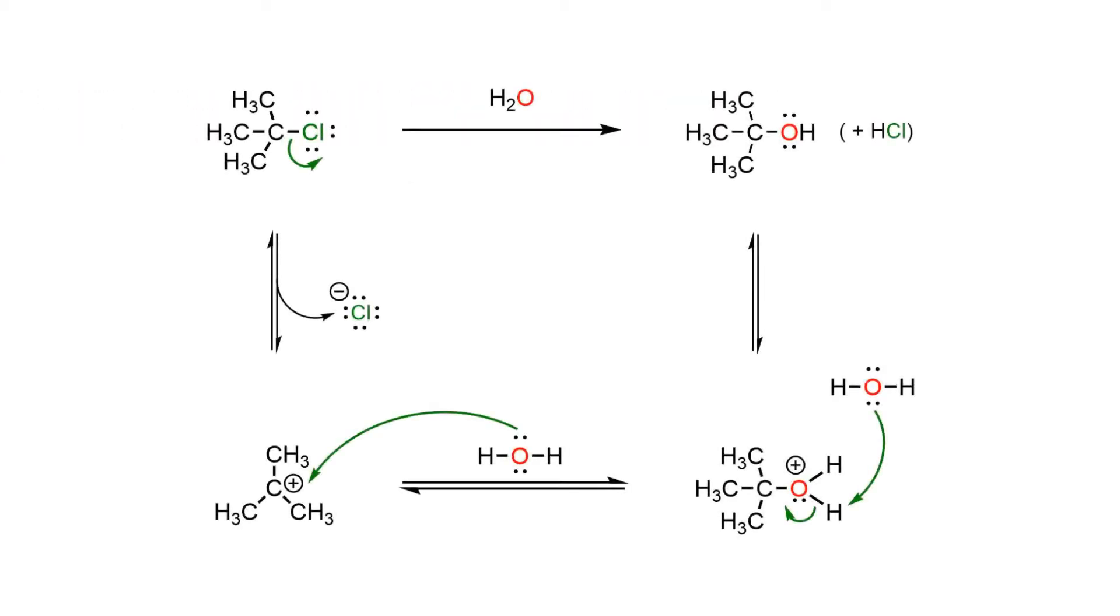When a good leaving group such as a halide is present on the substrate, the polar solvent promotes loss of the leaving group to produce a carbocation. The carbocation is flat, sp2 hybridized, and in need of electrons.